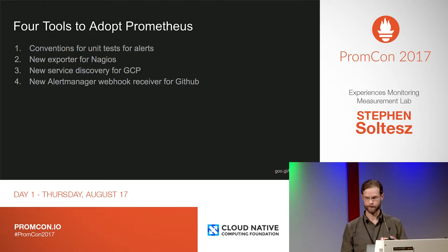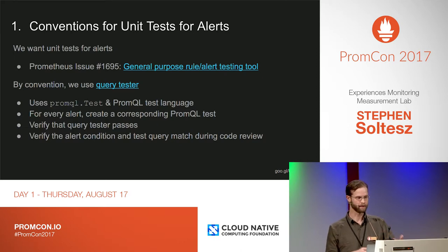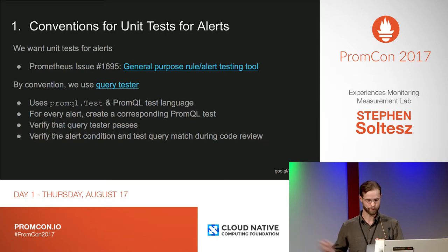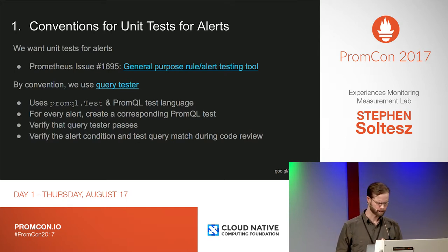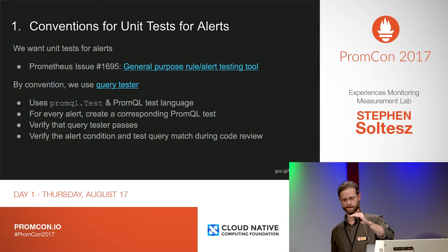So far, four new tools have helped us adopt Prometheus. First: conventions for unit tests for alerts. We write unit tests for code we run in production infrastructure, and we write alerts for the infrastructure we care about. We really want to write unit tests for alerts before we depend on them. That feature isn't supported directly yet, but there is an open issue tracking the feature. Until that feature is available, we've adopted a convention around a very simple utility we've created called QueryTester. QueryTester uses the PromQL test interface and the PromQL test language. For every alert that we create, we create a corresponding PromQL test file. We verify that the QueryTester passes, and then during code review, we do a manual comparison between the alert condition and the PromQL test.